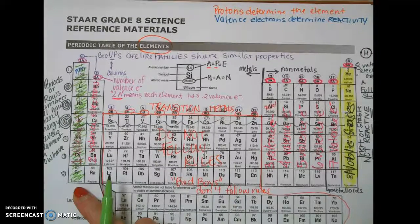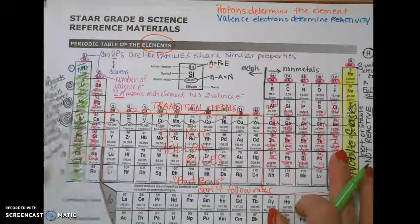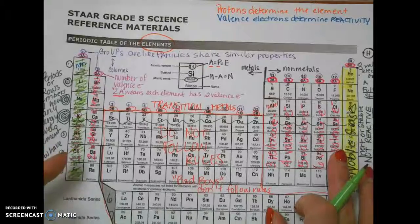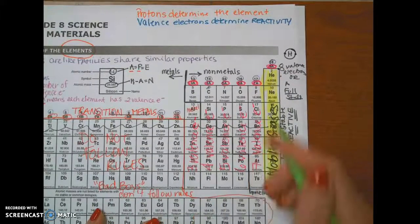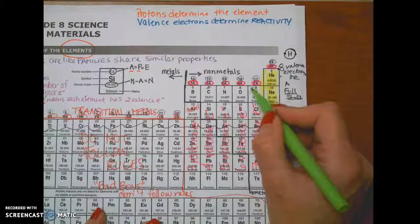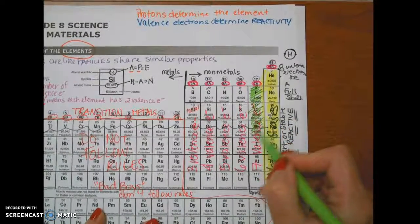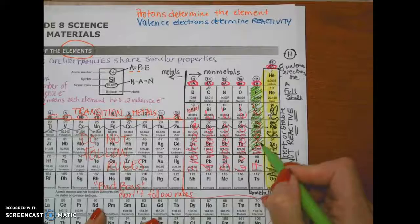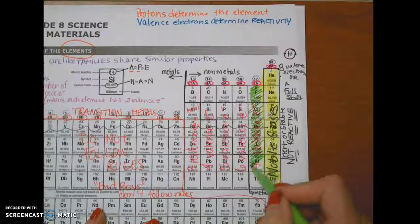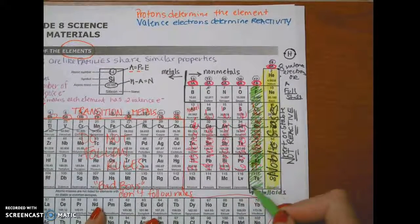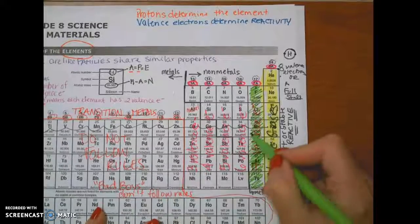Group 1 has one valence electron and wants seven more. There are elements that group 1 will bond with — that is group 17, because group 17 has seven valence electrons. So we're going to shade group 17 the same color as group 1, because they will want to bond with one another if they bump into each other.